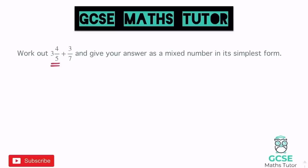I'm going to use the same method for all of these types of questions: making any mixed numbers into top-heavy, or improper, fractions first. So for 3 and 4 fifths, we want to turn that into an amount of fifths. We figure out how many fifths are in 3: 3 times 5 is 15. Add the extra 4 fifths to get 19 fifths. So 3 and 4 fifths becomes 19 fifths, and we're going to add that to the 3 sevenths.